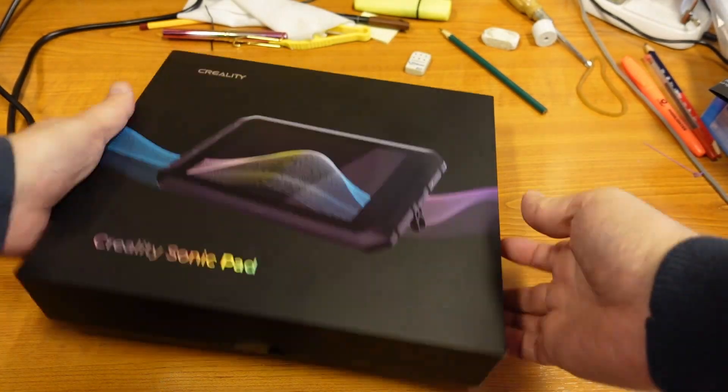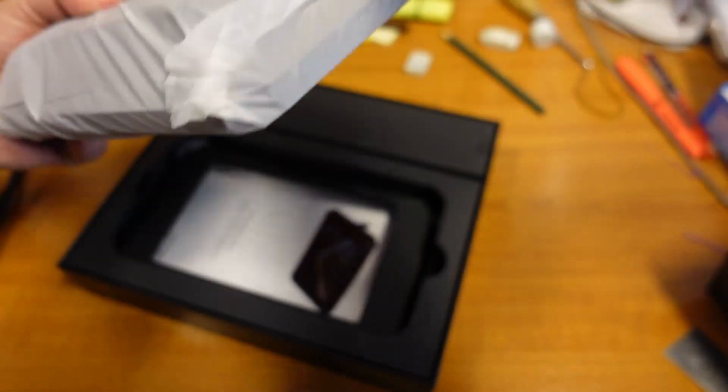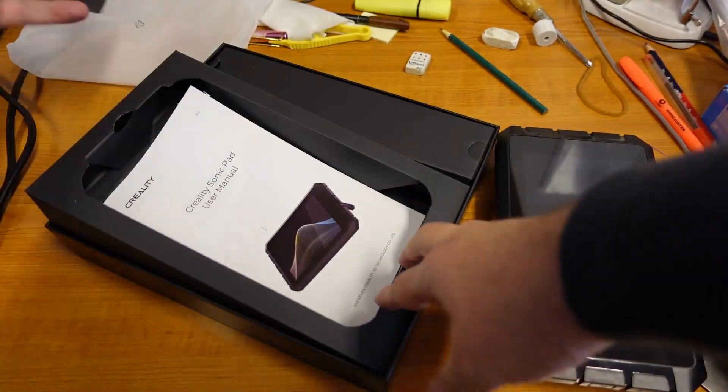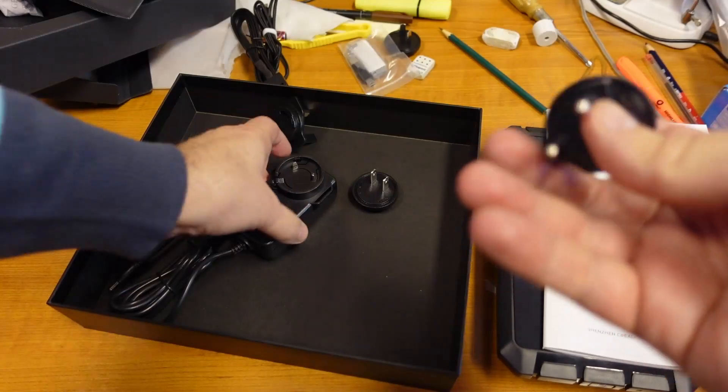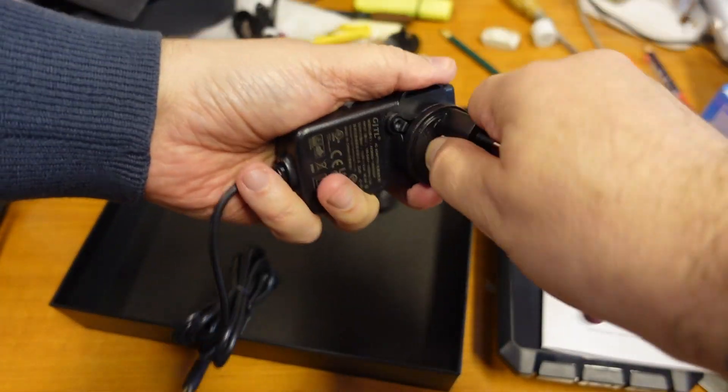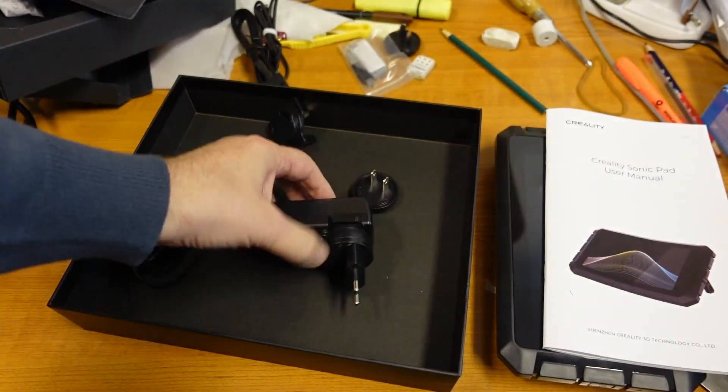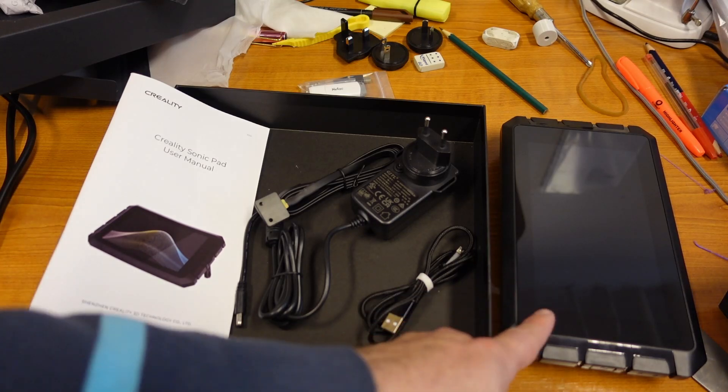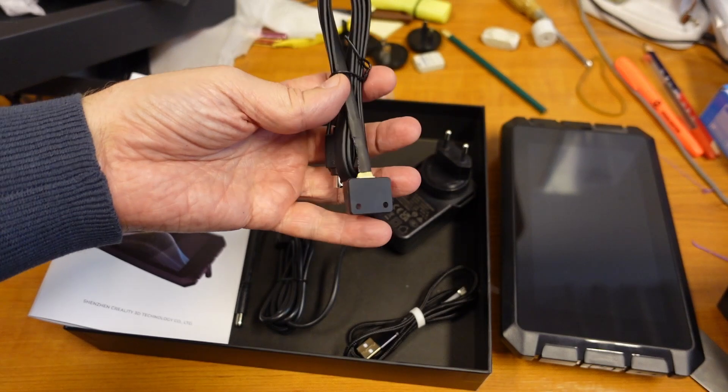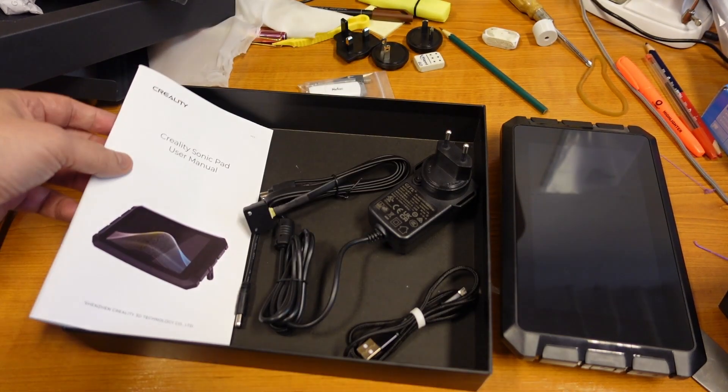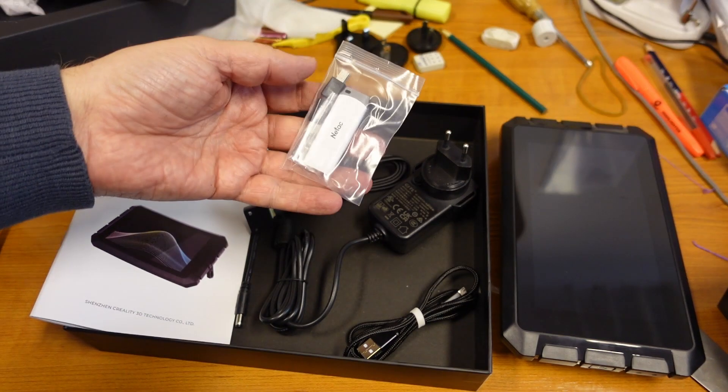Let's time to unbox it. I'm attaching here the EU plug which I will use. This was the content of the package: this is the main unit, micro USB cable, power adapter, and this is the accelerometer. User manual and USB drive with some adapters.